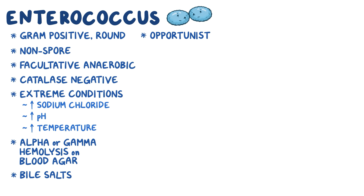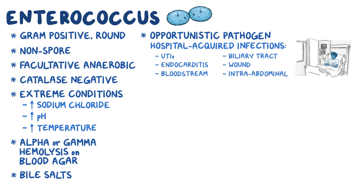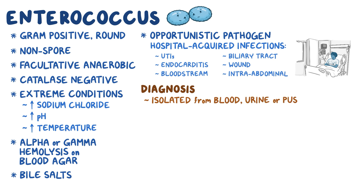It's an opportunistic pathogen which causes a wide variety of hospital-acquired infections like UTIs, endocarditis, bloodstream infections, biliary tract infections, wound infections, and intra-abdominal infections. For diagnosis, it can be isolated in cultures from blood, urine, or pus, depending on the type of infection.